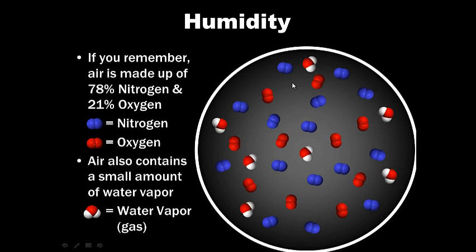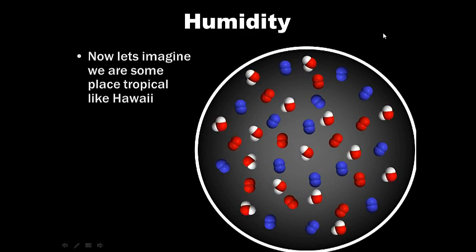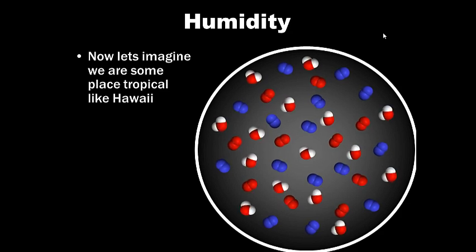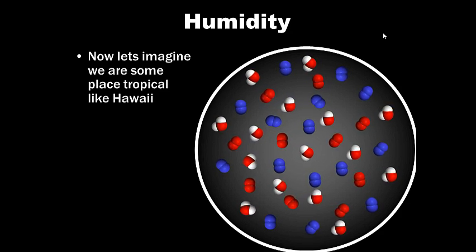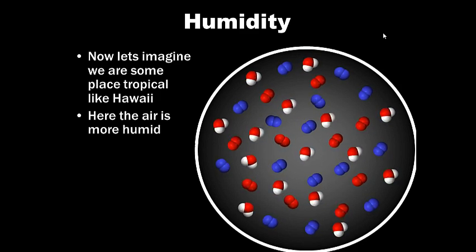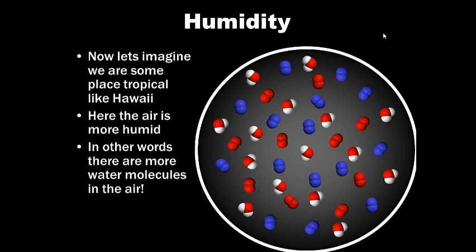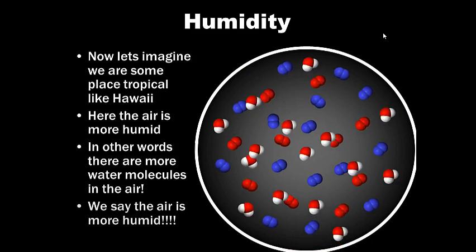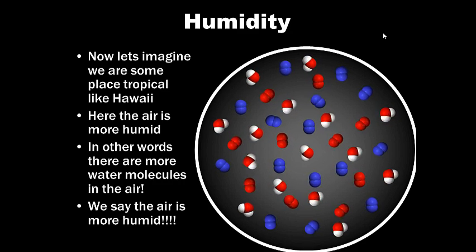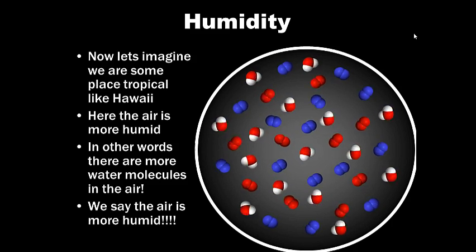Water in our air. Let's imagine we're someplace tropical like Hawaii, where you're near a large body of water. Here, the air is more humid. There's even more water molecules in the air. Because there's more water in the air, we say the air is more humid. It's more sticky. Makes a lot of people's hair turn curly too. That's humidity.